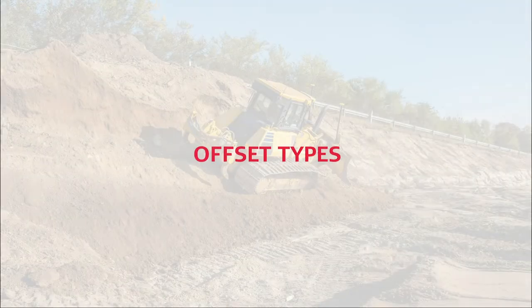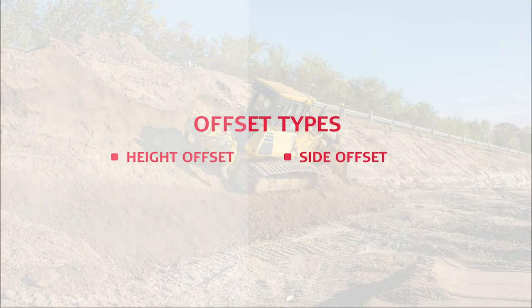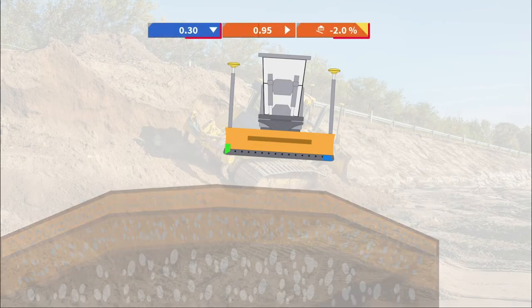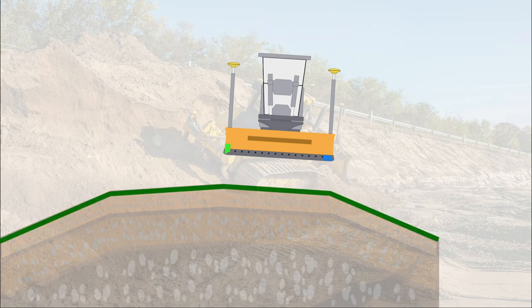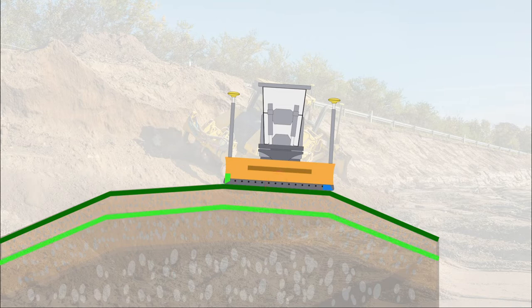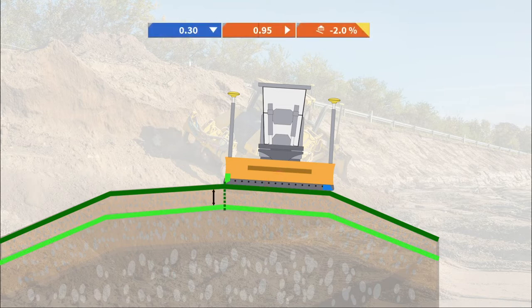There are two offset types: height and side offsets. The first and most important offset is the height offset. It is related to the cut-fill values. Height offset is how much you push the active height reference up or down from the design's height reference. When you work with the new offset, you need to know which height tool point position you should use: left, right, or center.